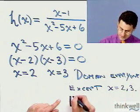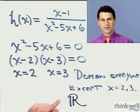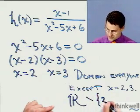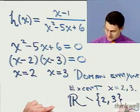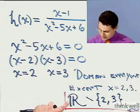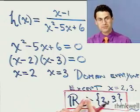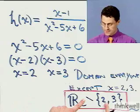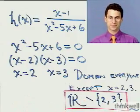You could write the following way. You could say the domain is all the real numbers except, minus the numbers 2 and 3. This notation just means all the people that are real except for, but remove the number 2 and the number 3. So there's the domain there.